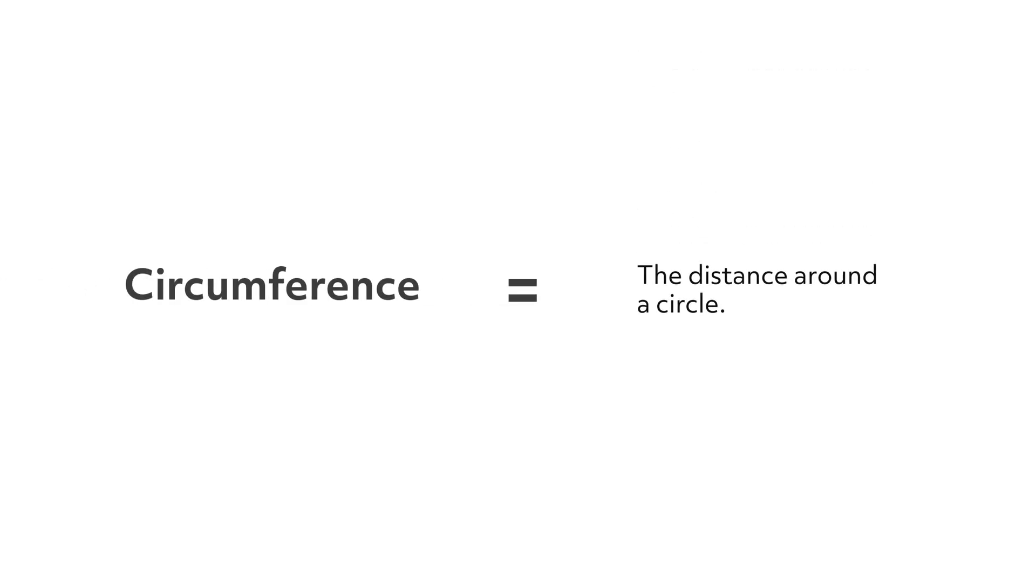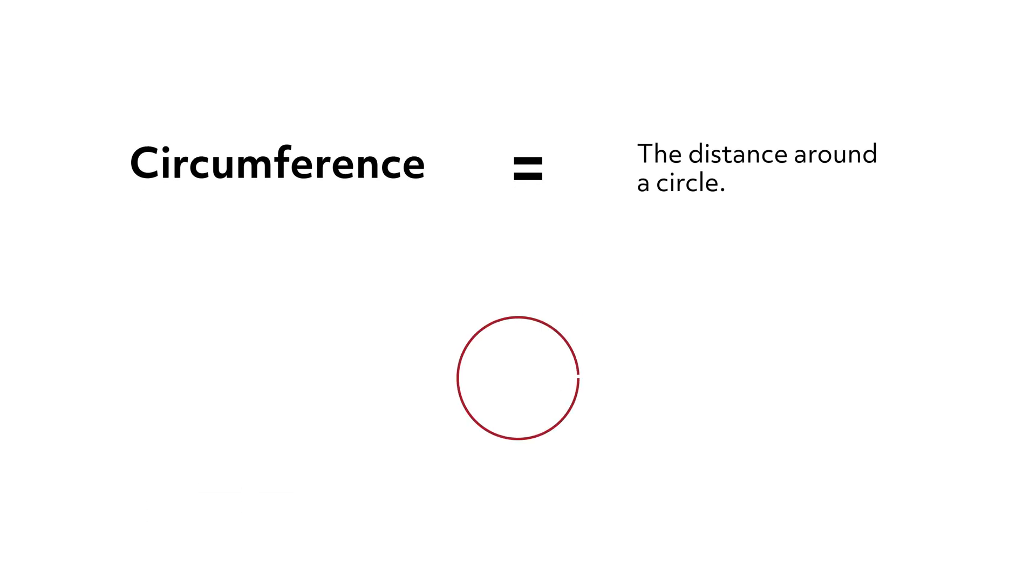The big C in the formulas is the circumference. This is the distance around a circle. It's like the perimeter of polygons, and it's measured in length units like meters and feet. If we were building a circular fence around a yard, you'd need to know the circumference of the circle to know how many feet of fence to buy.